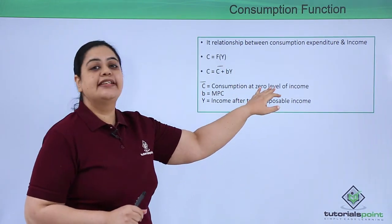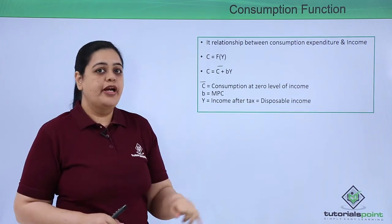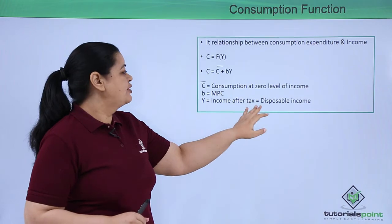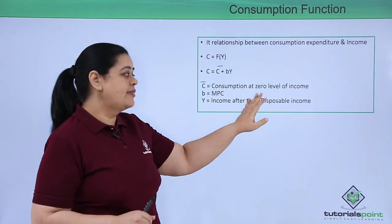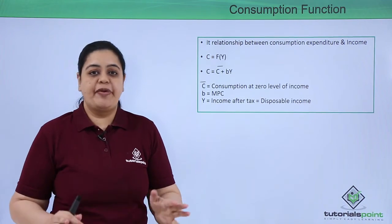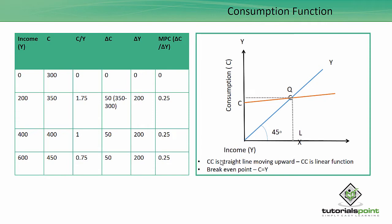Now what is that? C bar is the consumption at zero level of income, and b is equal to your MPC, and then comes Y, which is income after tax, that is your disposable income which you can spend without any restrictions. Now we understood that the relationship between consumption expenditure and income is the consumption function. So I told you C is equal to f of Y.